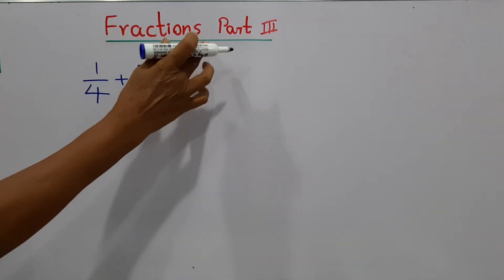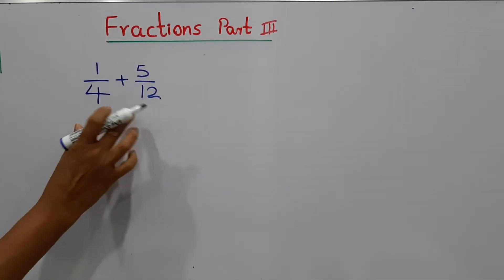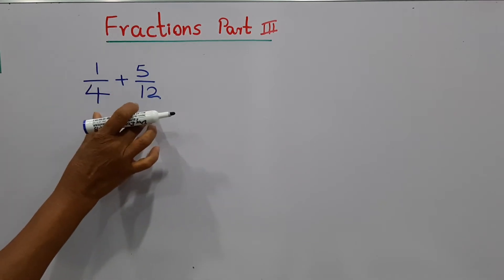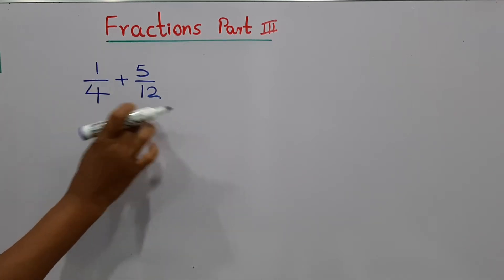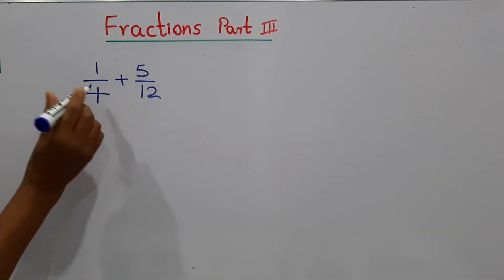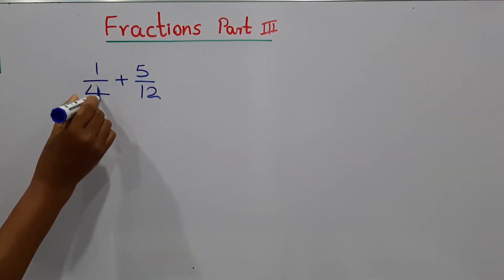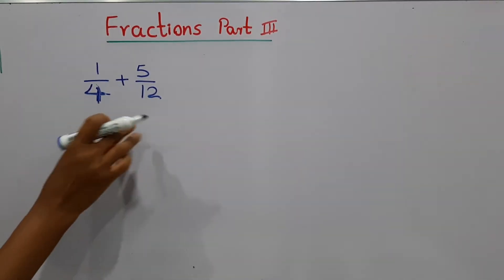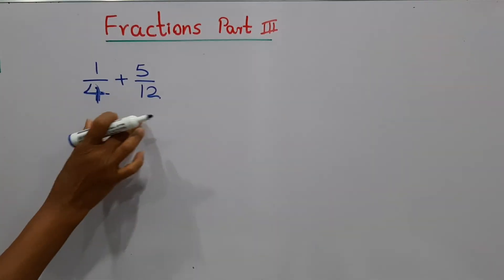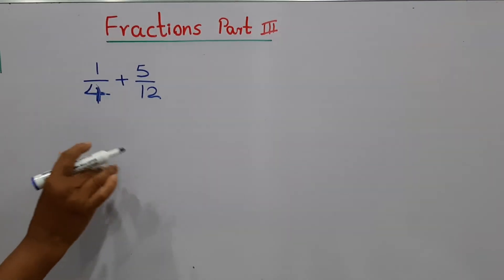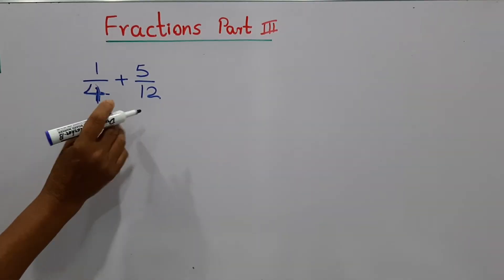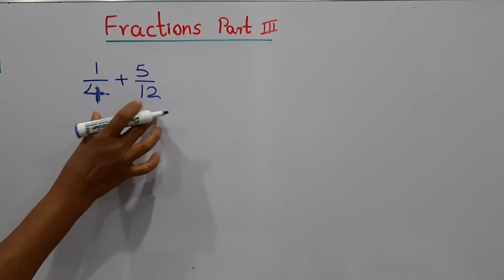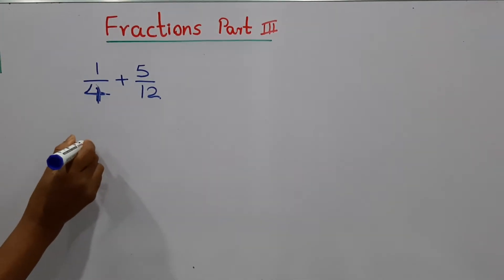In our earlier lesson, Part 2, I taught you to do additions where we just add two fractions together because the denominator was the same. But here, one fraction has denominator 4 and the second fraction has denominator 12 — two different numbers. We can't add these two together at once. What we are going to do is make these two numbers the same, then we can add.